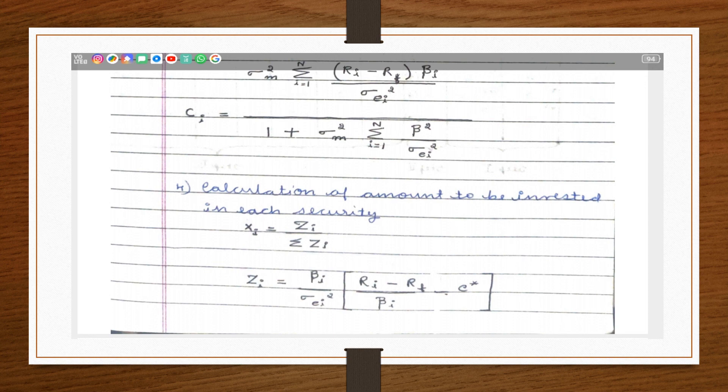Here is a formula wherein you can find out the Ci, the cutoff rate. Ci is equal to standard deviation M square into summation Ri minus Rf into beta i upon sigma Ei square. Sigma Ei square is unsystematic risk.